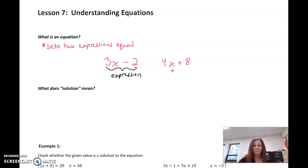This here is an expression. We can put a bunch of different things for x. Over here, it's an expression. We can also substitute in a bunch of different numbers for x. But then, if I put this equal sign in between them, this whole thing then becomes an equation. It sets two expressions equal to each other. Now we're limited. We can't put whatever we want in for x because we have to make sure that it equals this side. Whatever this side is, it has to equal this side. Got to keep them in balance.